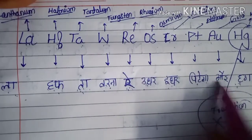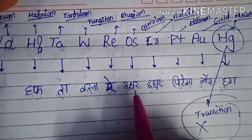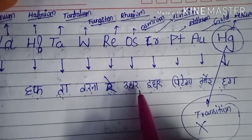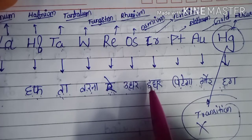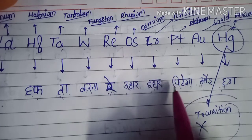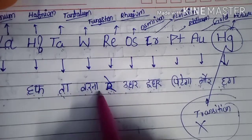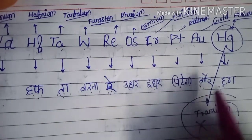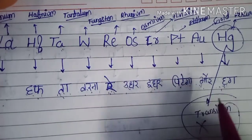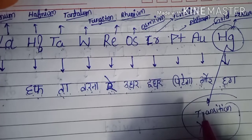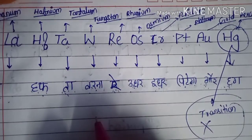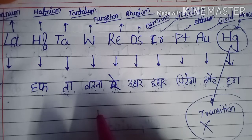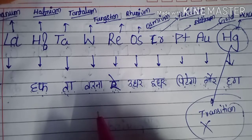Remember: 'La hafta, verna Re, udhar se, idhar se pitega, or hug.' You can add connectors like 'se' after 'udhar' and 'idhar' to make it easier to memorize. So the full sentence is: 'La hafta, verna Re, udhar se, idhar se pitega, or hug.' That was today's video — thank you for watching. If you want more such videos, please subscribe to the channel and like the video.